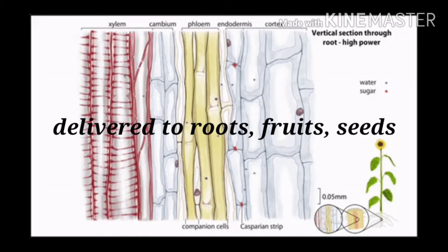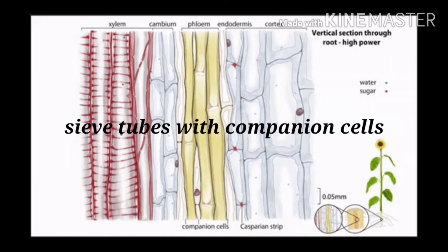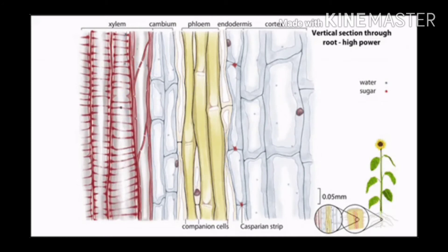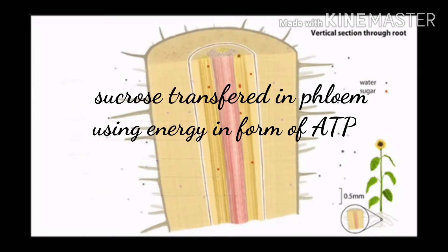The translocation of food is done in the sieve tubes with the help of companion cells, both in the upward and downward direction. Translocation in phloem is achieved by utilizing energy — material like sucrose is transferred into phloem tissue using energy from ATP.